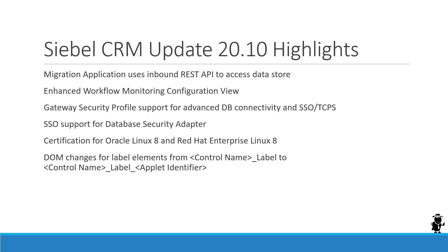20.10 comes with an update of certification, so you can now officially run Siebel CRM on Oracle Linux 8 or Red Hat Enterprise Linux 8. There is also a small but important change for anyone who works with the OpenUI API and produces OpenUI JavaScript: the DOM elements for labels now change the identifier from a concatenation of control name underscore label to control name underscore label underscore applet identifier, so they are now unique across the page.